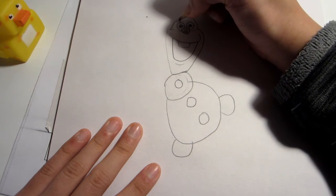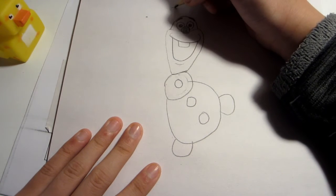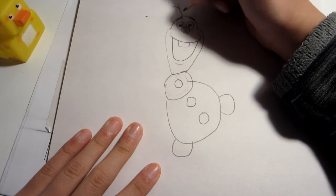Eyes: a circle, smaller circle for the pupil, and then a little bit of glare to make it look like the actual Olaf.